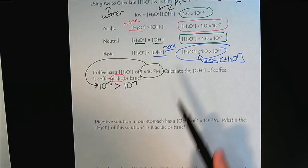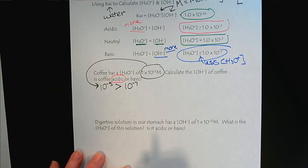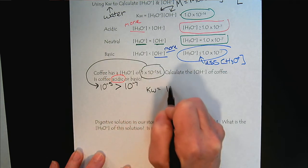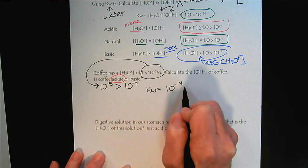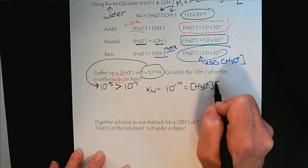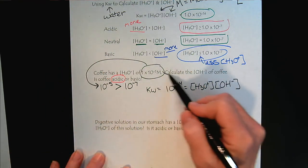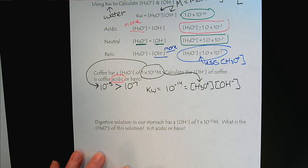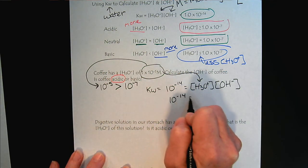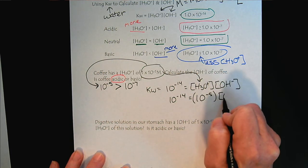Now let's go ahead and calculate the hydroxide equation. So basically this is a very simple algebraic expression. The KW equals 10 to the minus 14, and we know that equals the hydronium times the hydroxide. And we know the hydronium concentration, so we can plug that in.